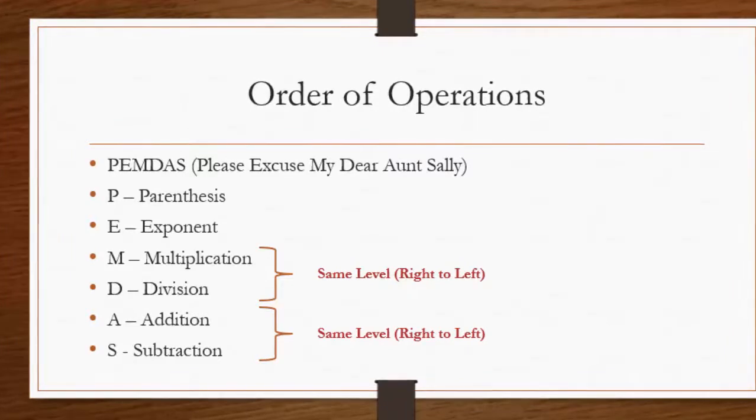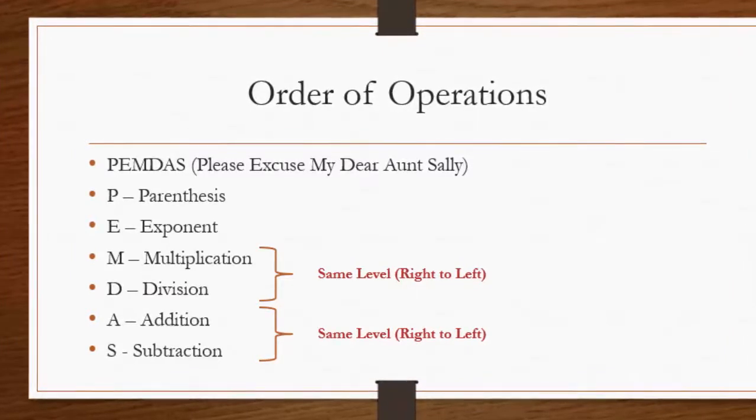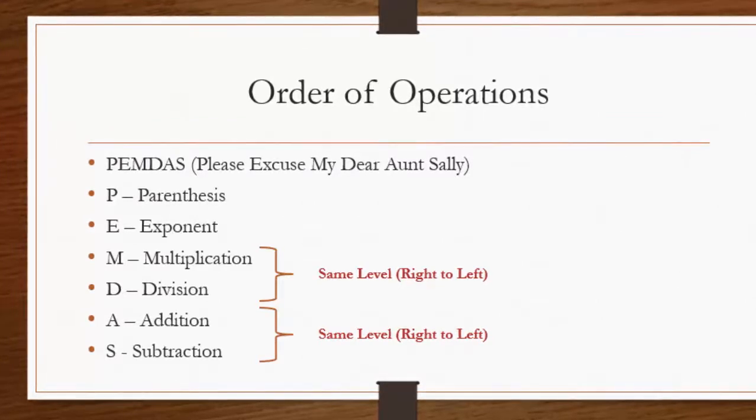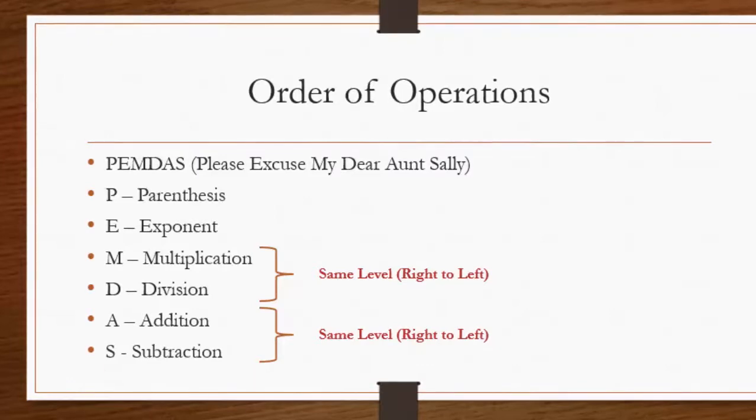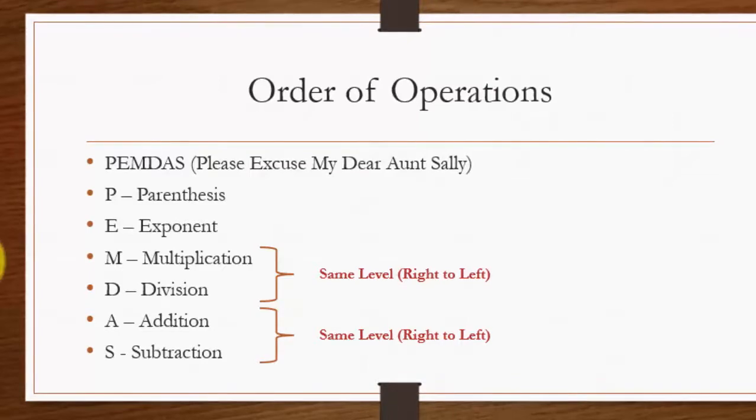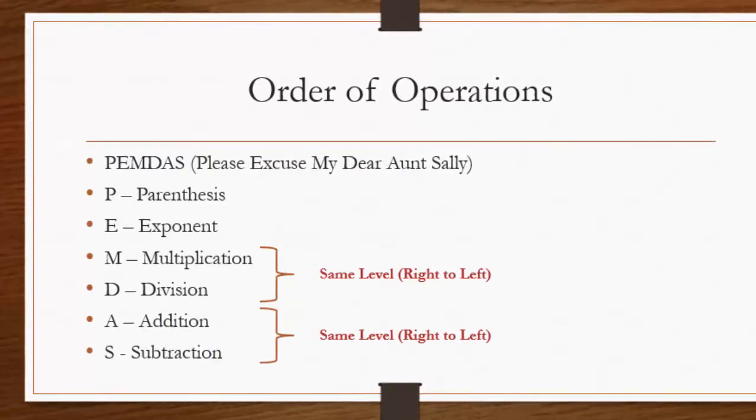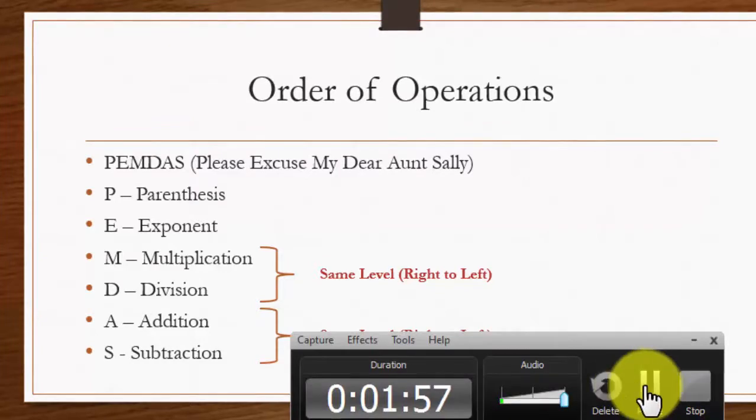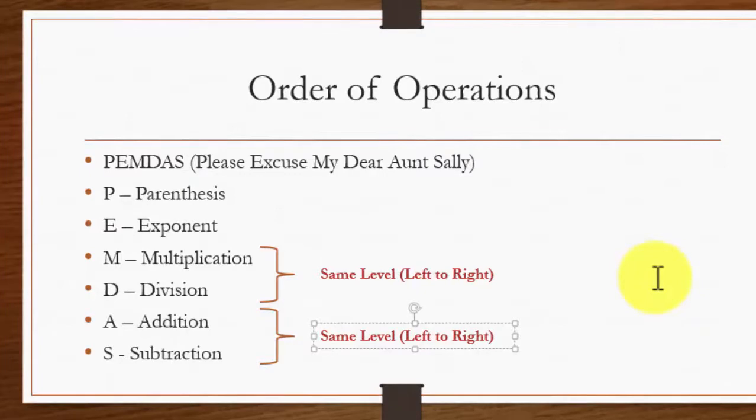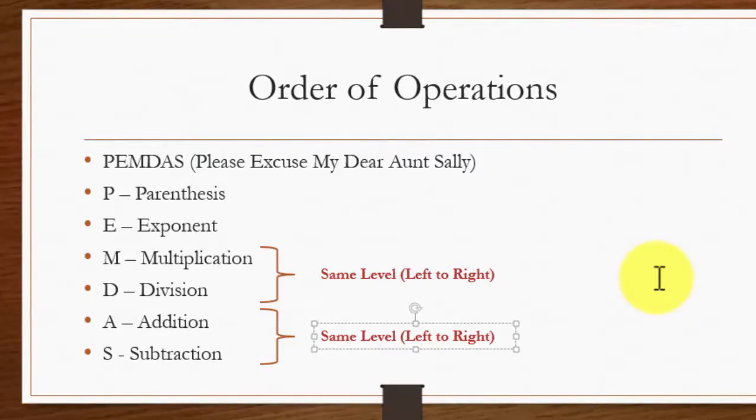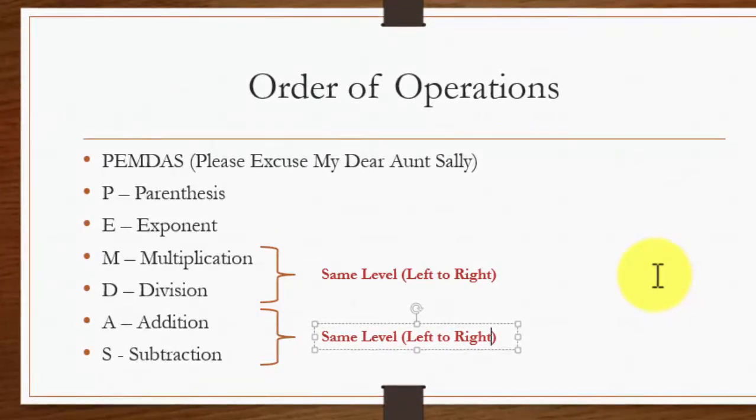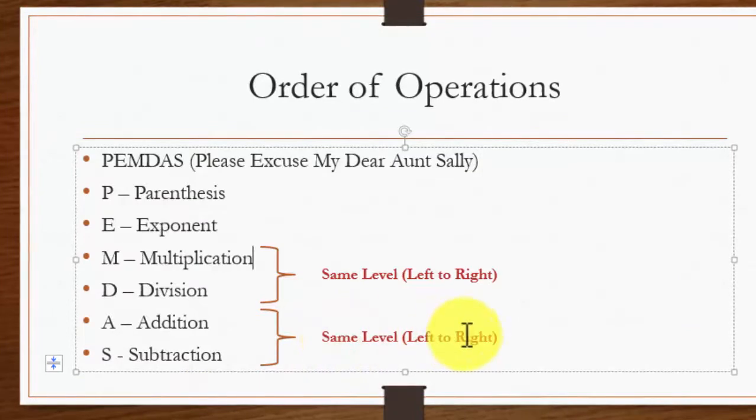Exponent then comes next which takes precedence over all other remaining ones. Multiplication and division are at the same level so you simply go from left to right. And similarly addition and subtraction is exactly the same, you go from left to right. So if they both come in the same operation you simply go from left to right.